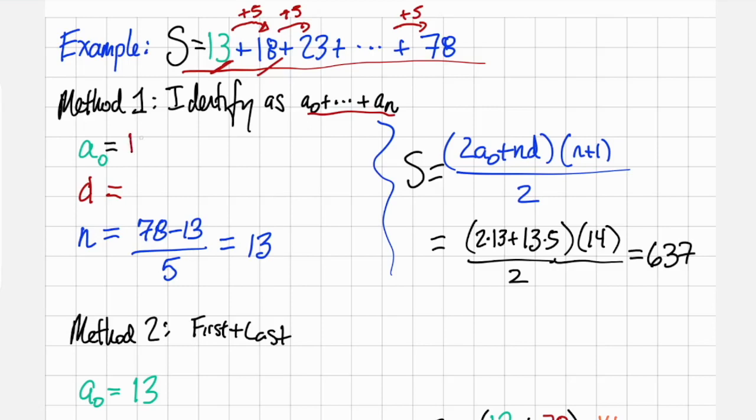a0 is equal to 13, d is the common difference, is 5, and we can calculate the index of the last term in this series by seeing that this would be 78 minus 13 divided by 5. So n is equal to 13.